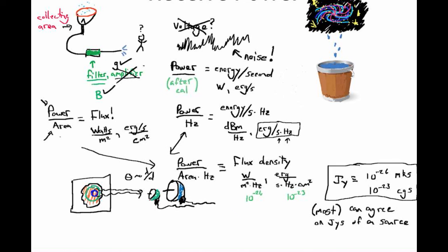So which wins out — do you win by having more collecting area or a wider beam? If we're measuring in Janskys — which is power per area per hertz — and we have a region that's emitting a patch on the sky...